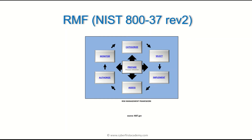NIST 800-37, Revision 2, talks about seven phases. The first phase is the prepare phase — this is your process initiation. As the name says, you prepare for everything you're about to do.